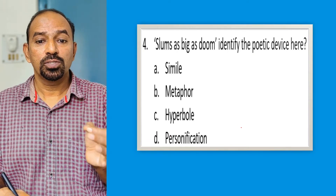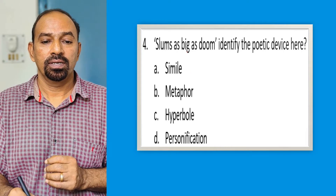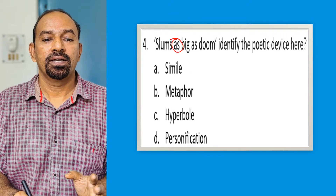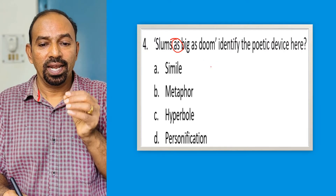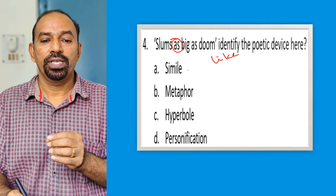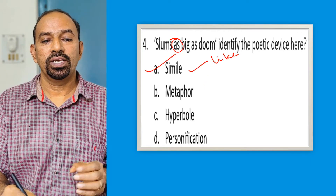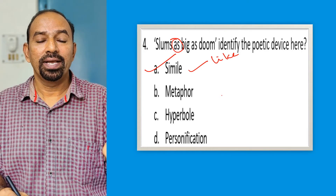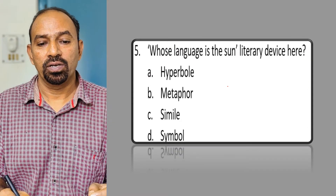Question four: Identify the poetic device in 'slums as big as doom'. When we compare using 'like' or 'as', the poetic device is simile. So simile is the right option here.